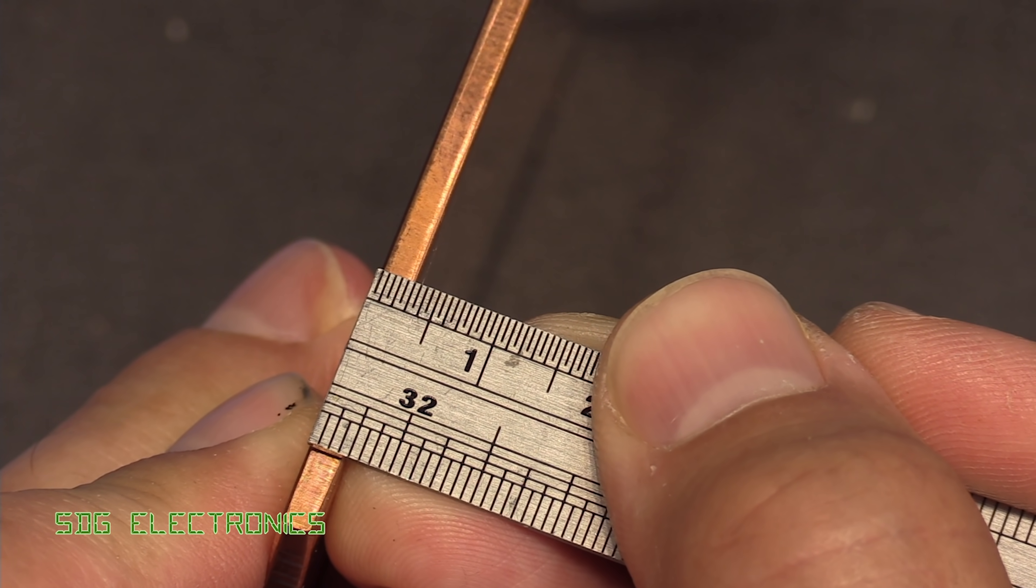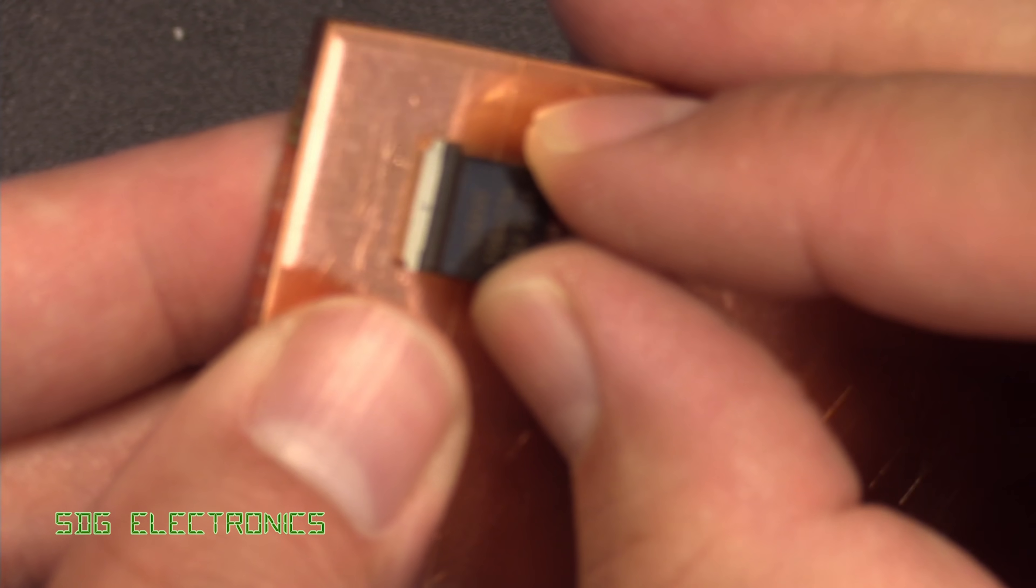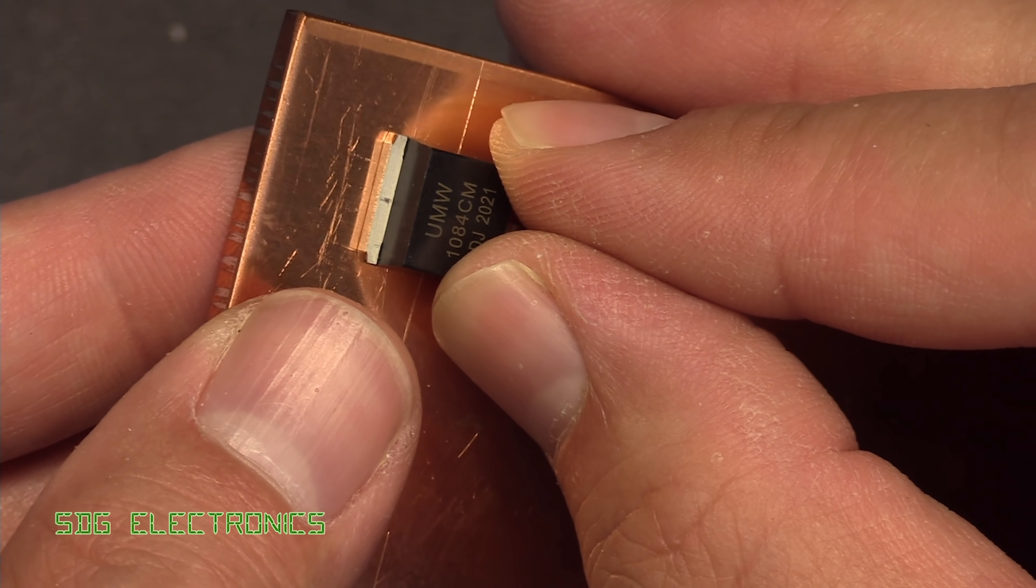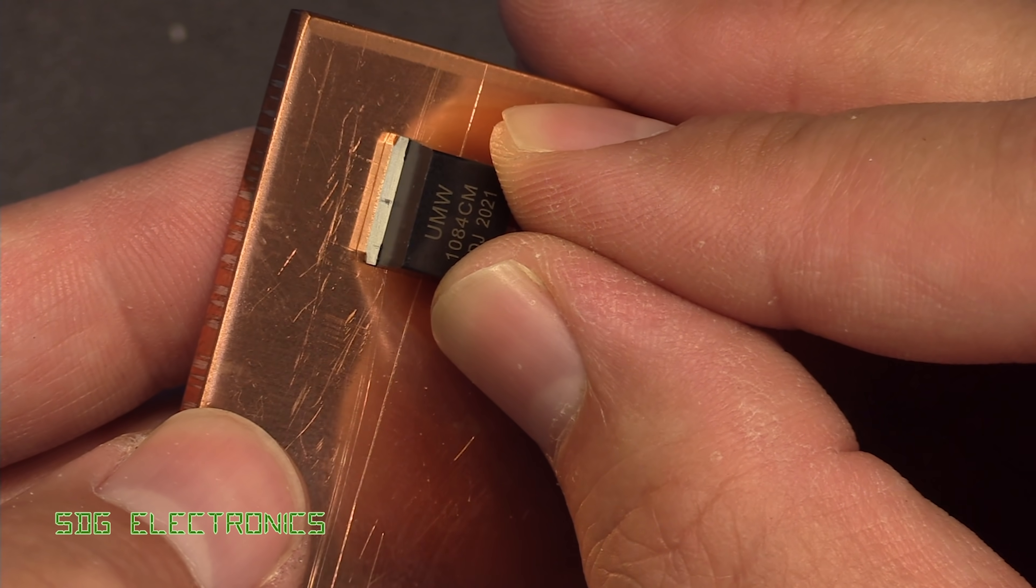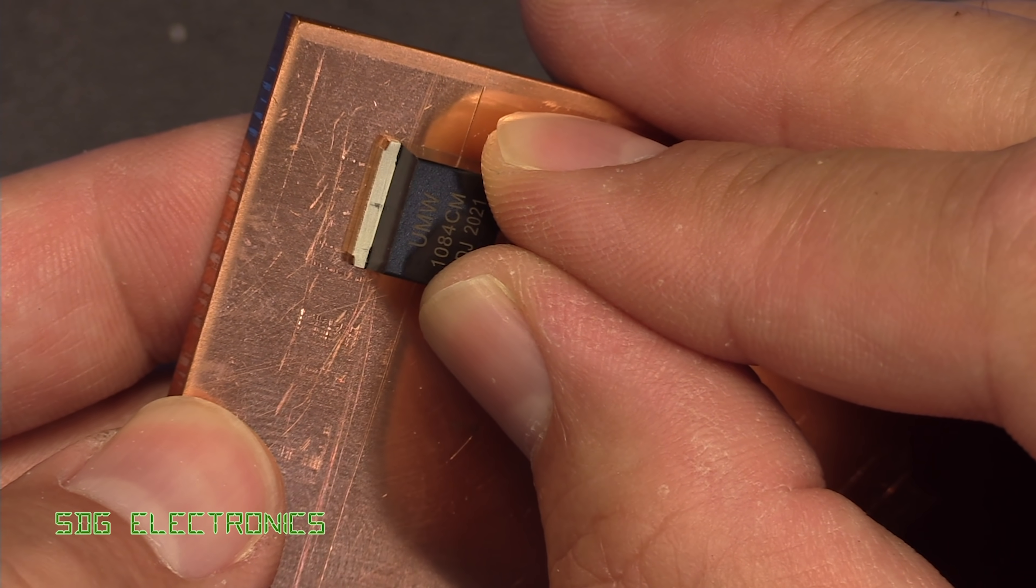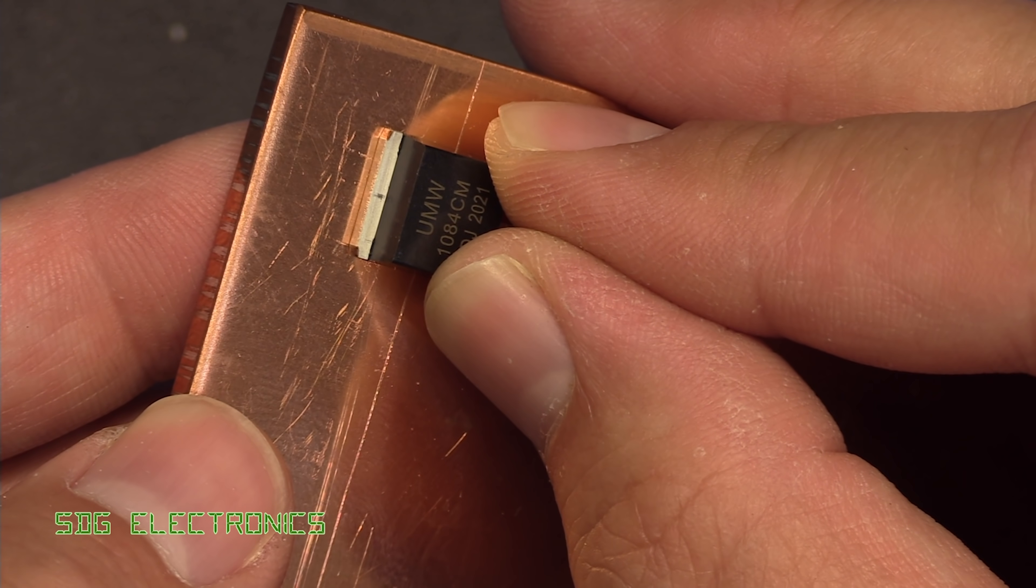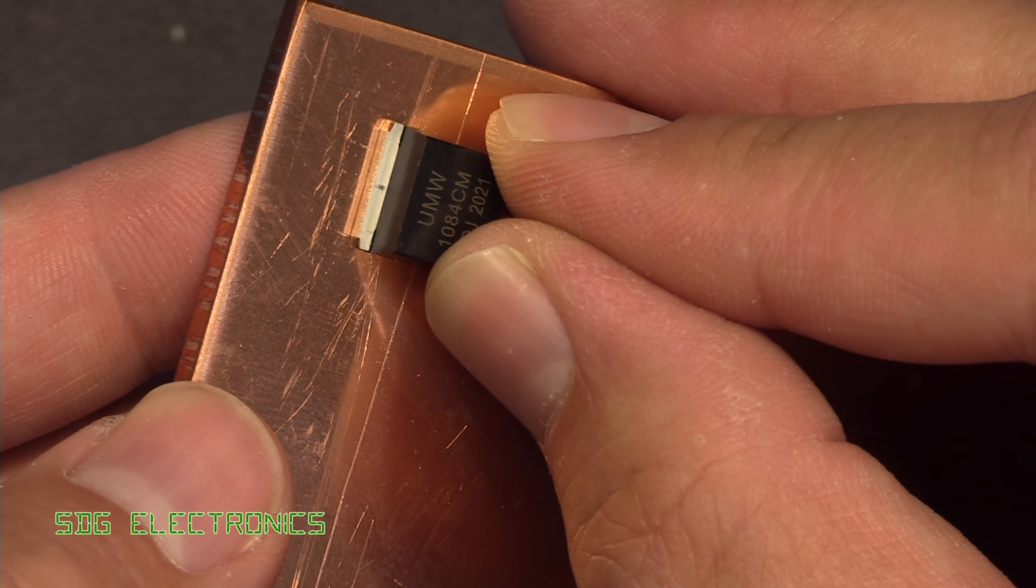I've got a piece of three millimetre thick copper as you can see here. What we're going to do now is see if we can actually solder a D2 pack package directly onto here. Let's say if you had an application where you needed direct heat sinking on some transistors or something like that.